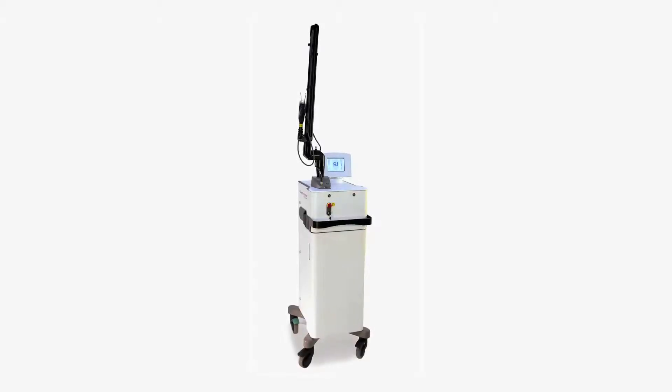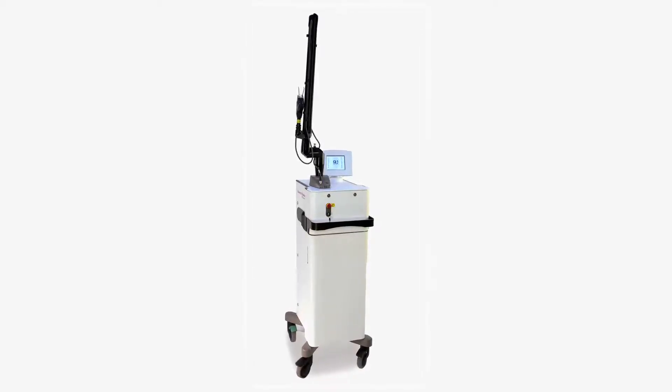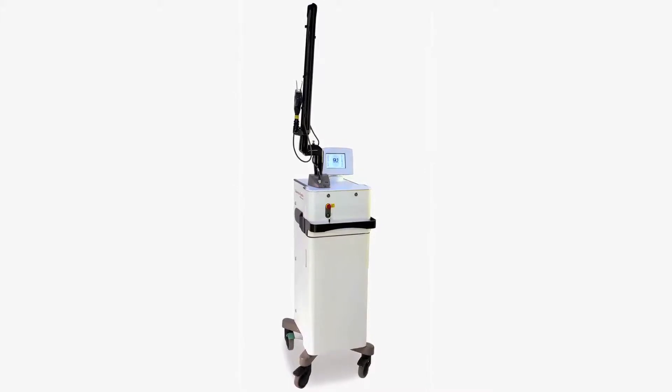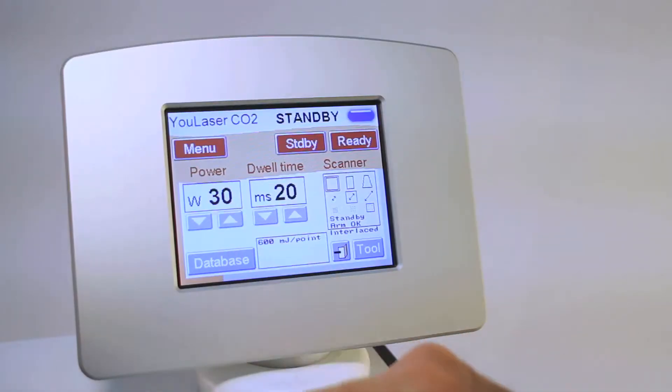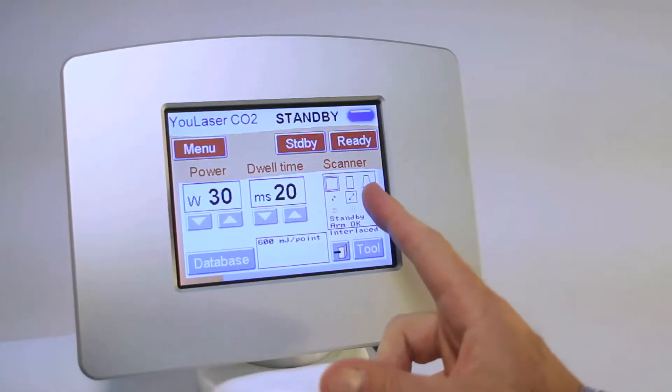This is the Ulaser Fractional CO2. This happens to have the scanner on it right now, but you can adjust your power, your dwell time, your shape, and the size of the shape.